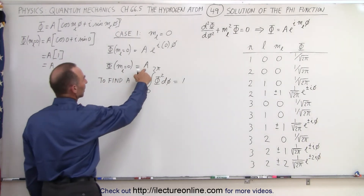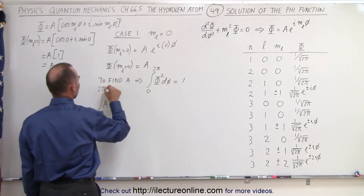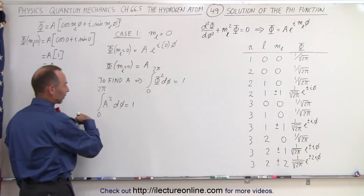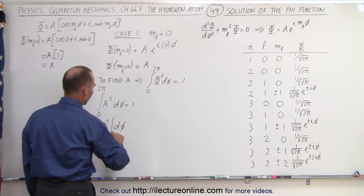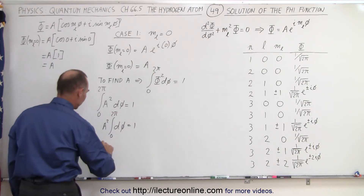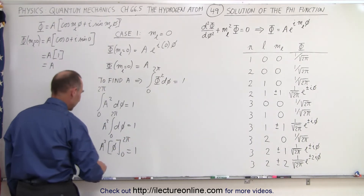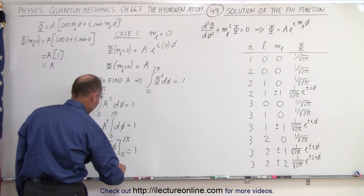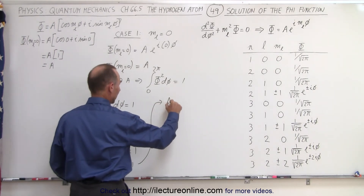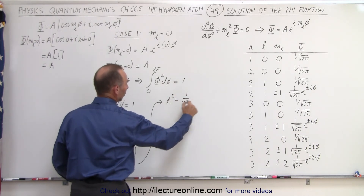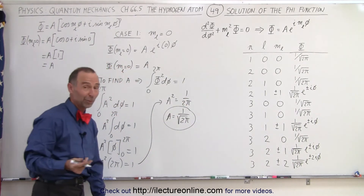Plugging in, we get a squared times the integral of d phi from zero to two pi, equal to one. Since a squared is a constant, it comes out: a squared times the integral of d phi from zero to two pi equals one. Integrating gives a squared times phi evaluated from zero to two pi, so a squared times two pi equals one. Solving, a squared equals one over two pi, which means a equals one over the square root of two pi — which is what we expect to see in the list of solutions.